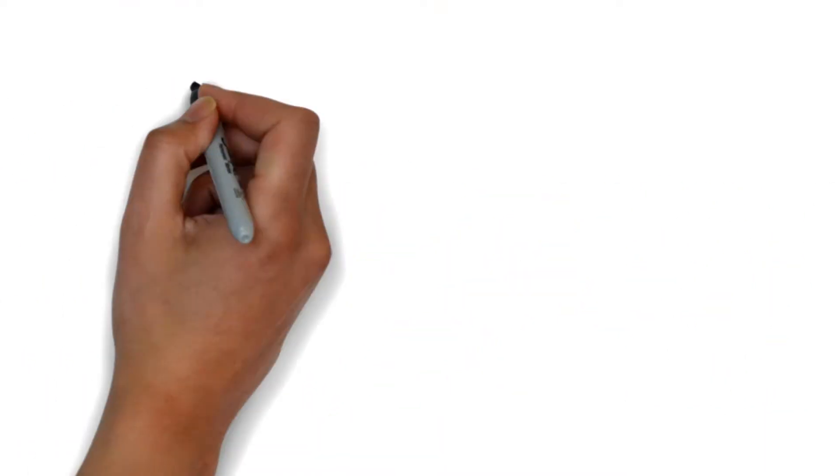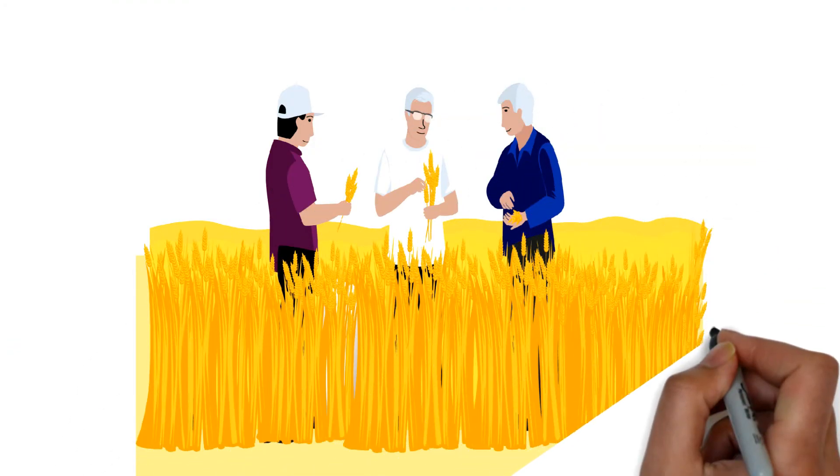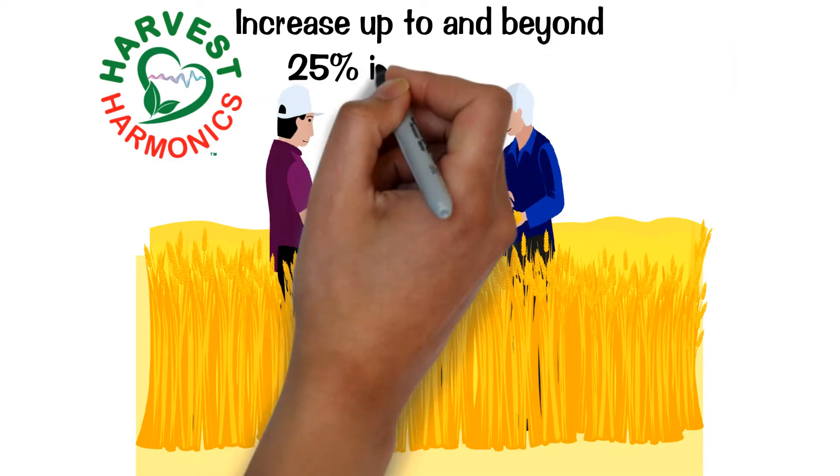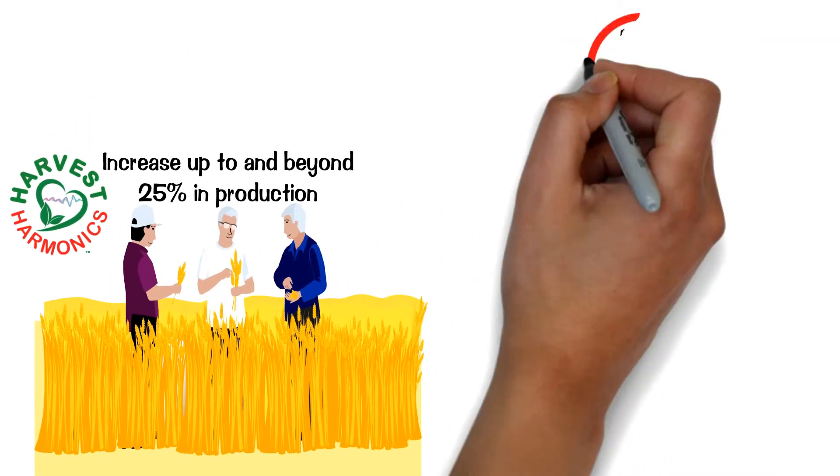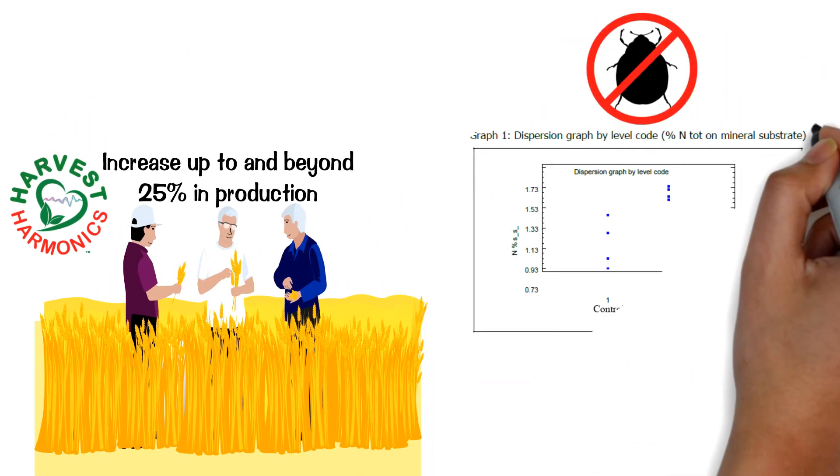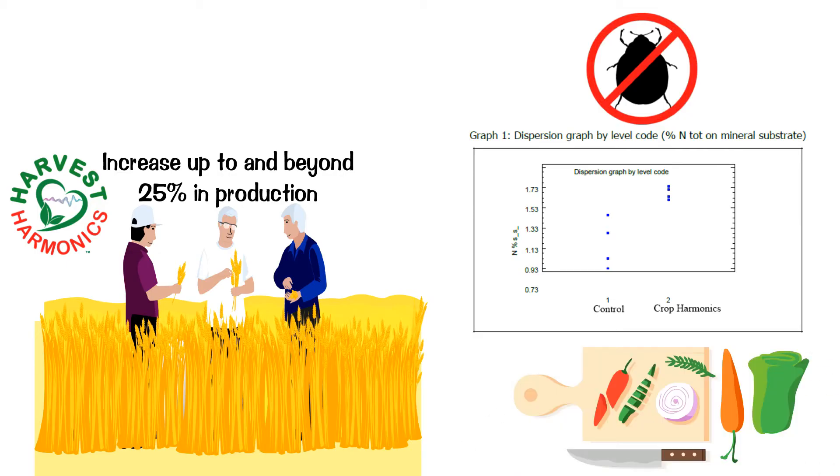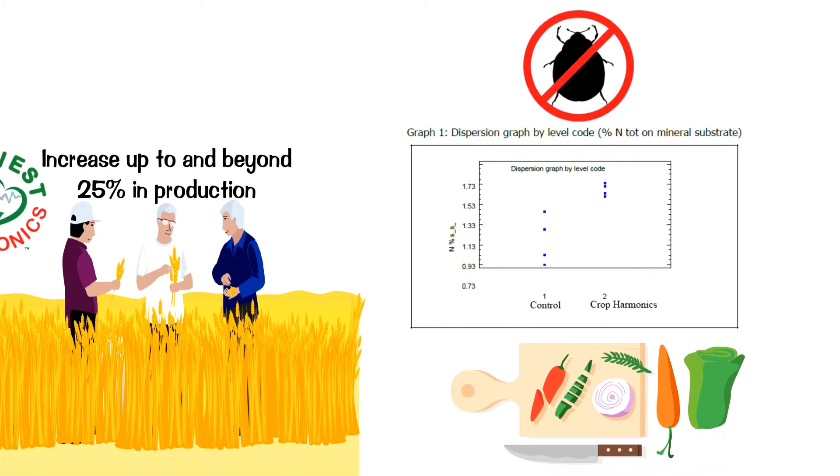In the fields where the microtransmitter system has been tested, the results have been exceptional, providing an increase of up to and beyond 25% of production. Also, the plants are more pest resistant, more nutrient dense, and provide a better quality of vegetables that have a better taste, a longer shelf life, and many other advantages.